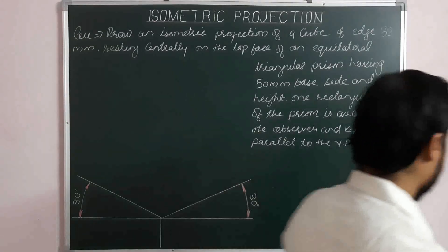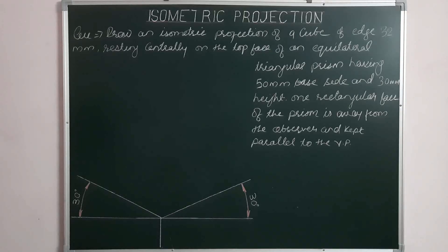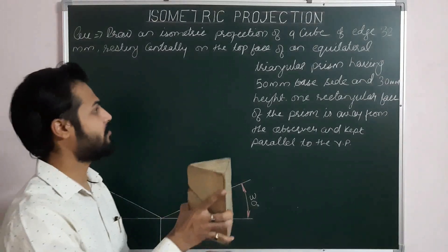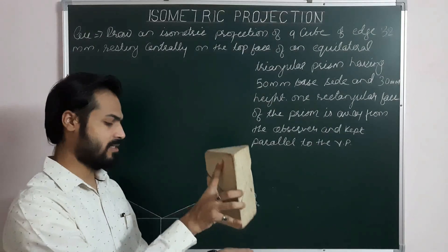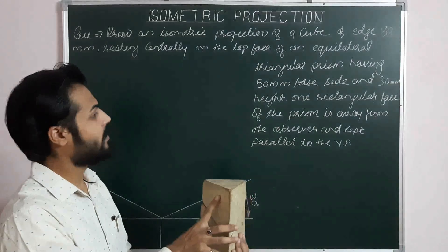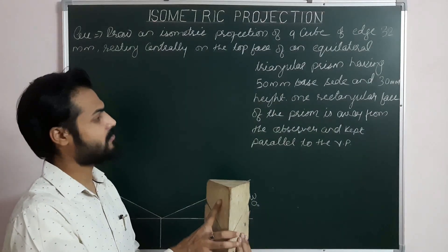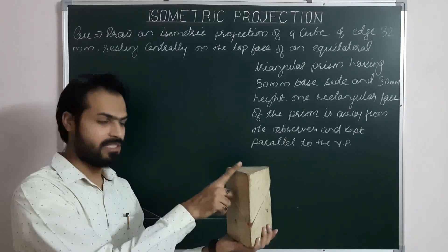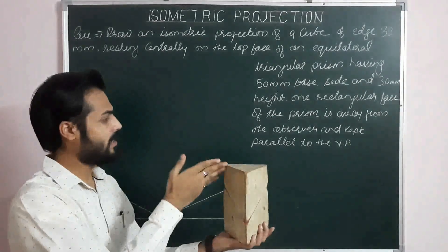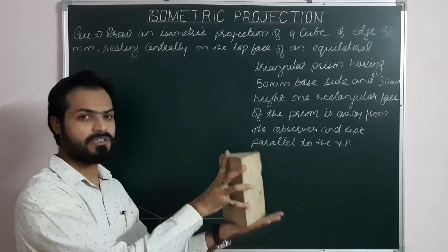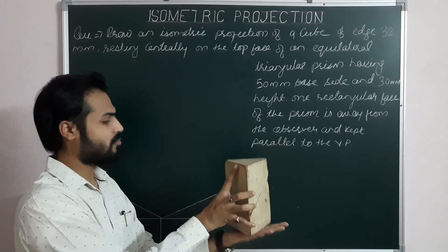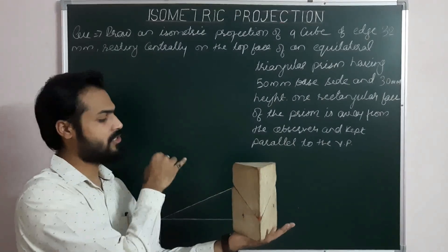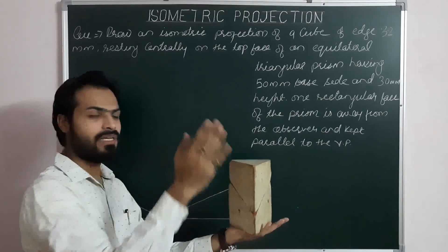As you can see, it's a combination of two solids — a cube and an equilateral triangular prism. The first solid is the equilateral triangular prism, which is resting on its base on the HP. One face of the prism — this rectangular face — is away from the observer and parallel to the VP. So this is the final position of the first solid, where it is resting on its triangular base on the HP and a rectangular face is parallel to the VP.